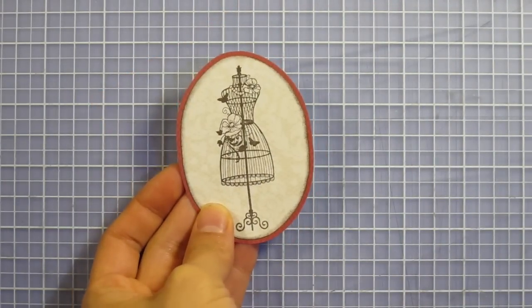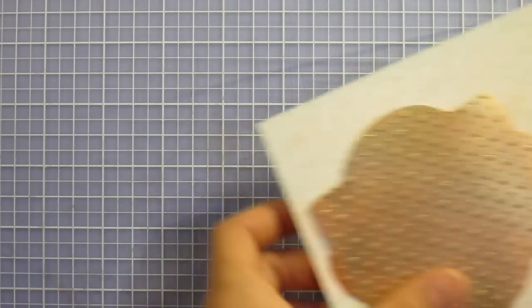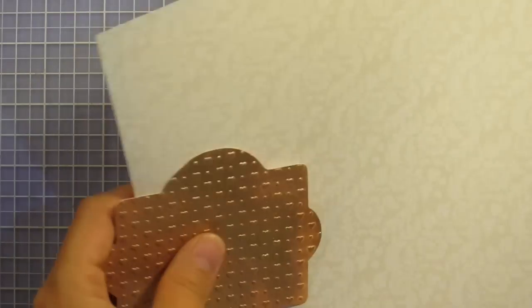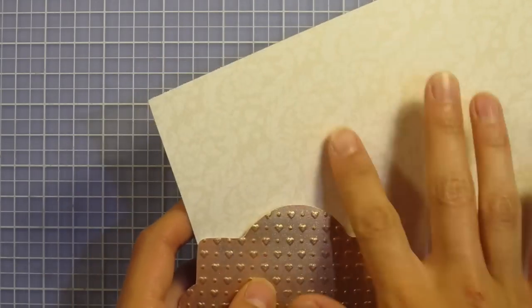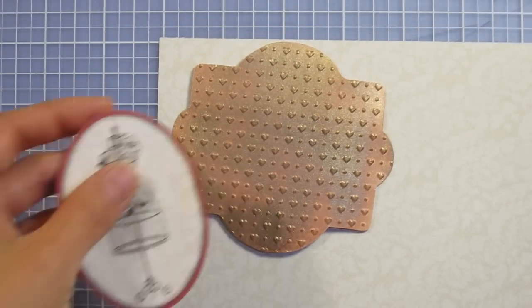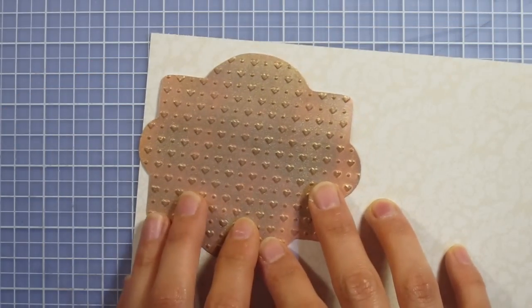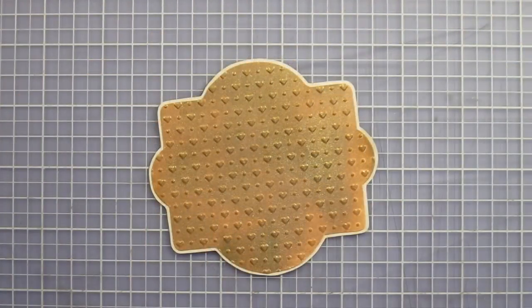Now that that's done, I'm going to mat this copper piece onto the cream colored paper. It's got a soft floral lace background to it. Using the same size mat as this, I'm going to mat this.